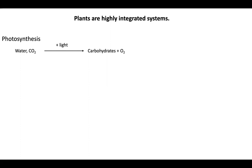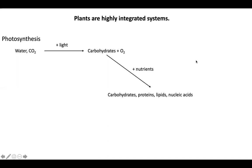I want to start with photosynthesis. Photosynthesis is our process by which we take water and carbon dioxide, add light energy, and create sugars in the form of glucose. So these are our carbohydrates. And as a byproduct, we also produce oxygen gas. Now these carbohydrates are taken to make the rest of the plant.